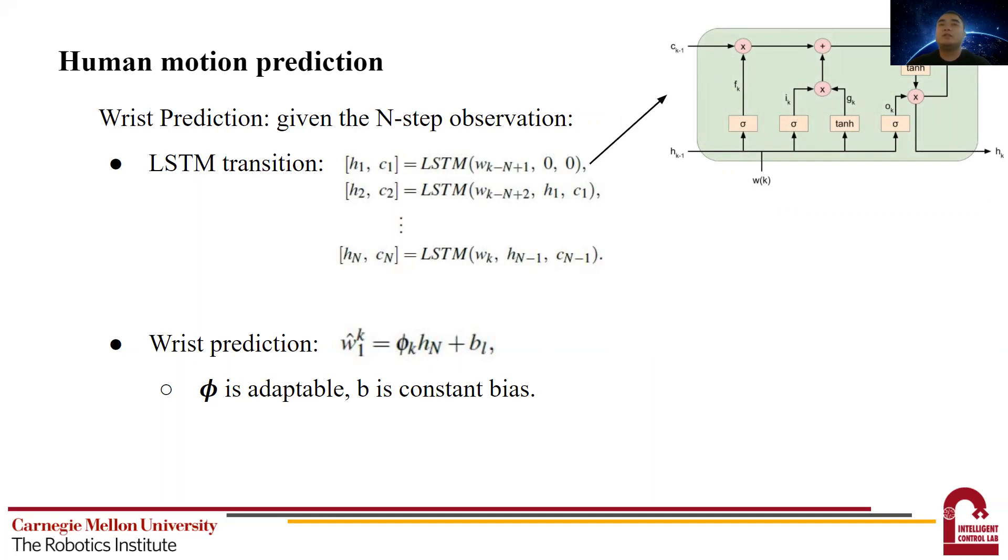For each cell, it takes in two hidden states, the wrist observation, and outputs another two hidden states. Then the LSTM cell propagates for N steps.